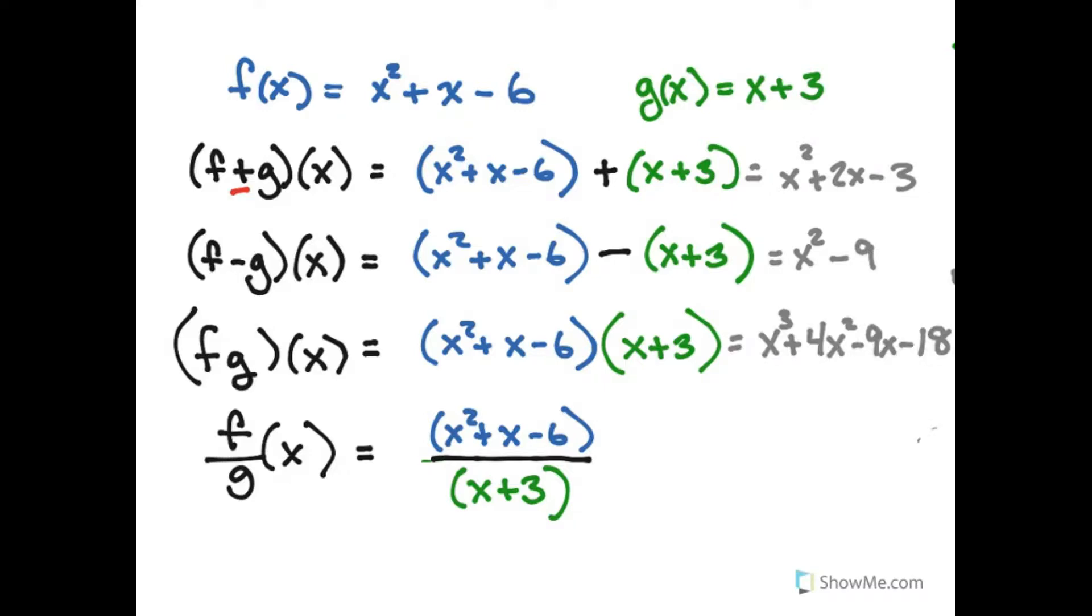When I multiply the two functions I just multiply the two expressions and so forth. We have to be a little bit careful with dividing because negative 3 cannot go into this function, it would make the denominator zero. But other than that it's just like simplifying expressions.